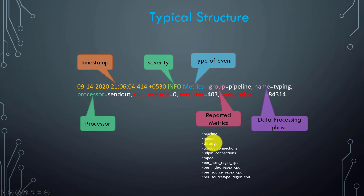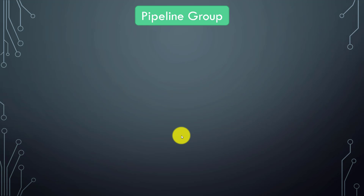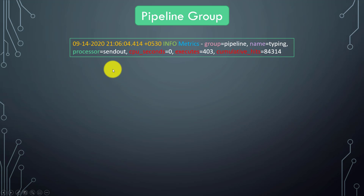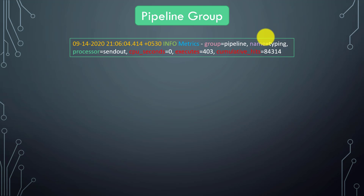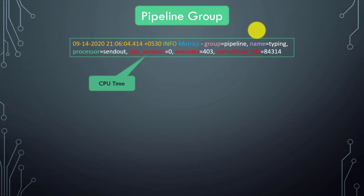Now we will talk about different groups in detail. First, the pipeline group — this is a typical event for group=pipeline. When we talked about converting a log to a metric, we worked with similar events. This is the pipeline event — whenever pipeline processes are triggered, this kind of log is generated.